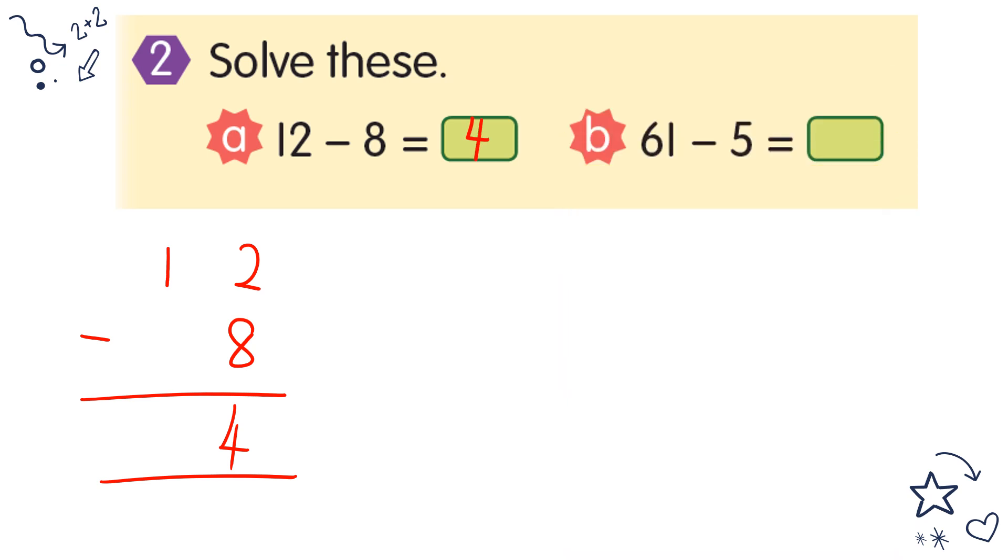For B: 61 minus 5. Not enough, borrow from 10. So this becomes 11. 11 minus 5 equals 6. Write down 5. So your answer is 56.